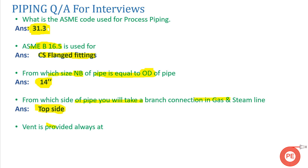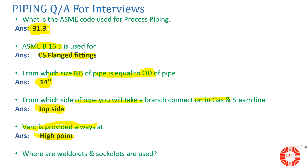The next question is: where is a vent always provided? The vent is always provided at the highest point, so that all gases trapped in the pipe can be released to the open atmosphere. If the vent is not at the highest point, gases may remain trapped. Similarly, the drain is always provided at the lowest point.